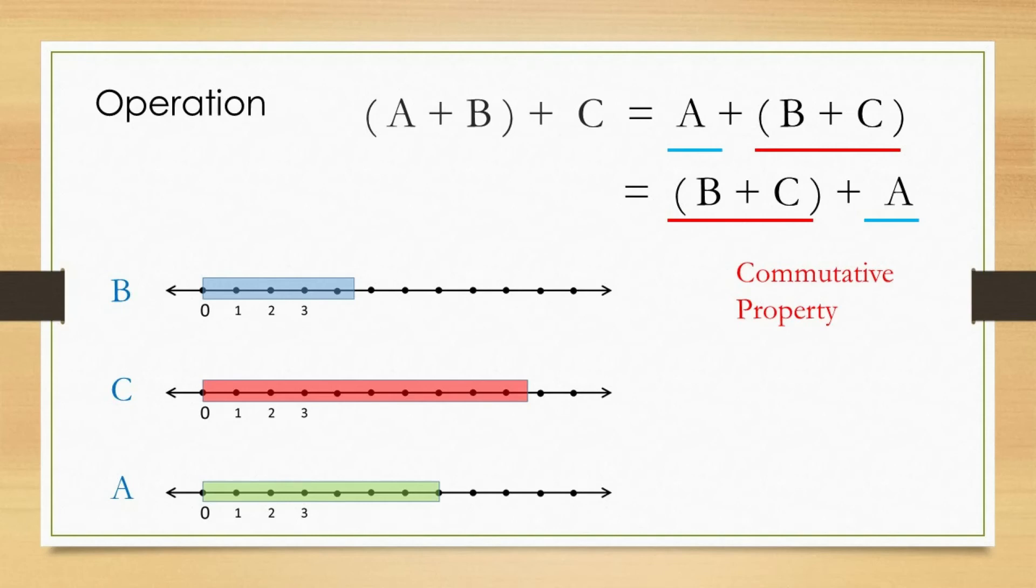As can be understood from the diagrams, regardless of the order of the placement of A and B and C, the total number of unit length which composed A, B, and C will always be the same.